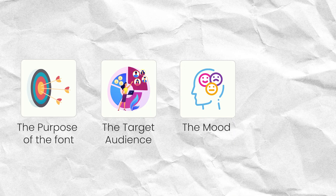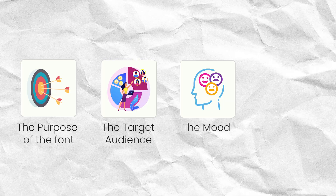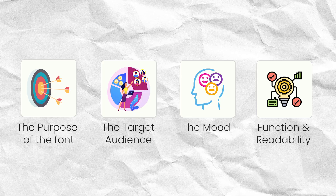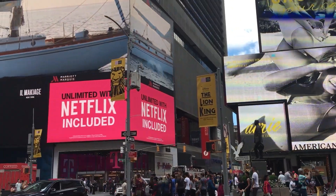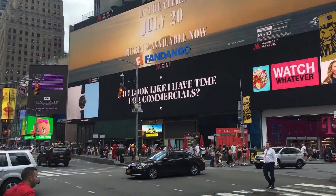The third thing to consider is the mood. Ask yourself what mood you want to convey and how you want viewers to feel after seeing your design — this alone should help you choose the perfect font. The fourth consideration is function and readability. Consider the intended use of the text: if it's a title or body text, that should guide your choice, because at the end of the day you want to make sure your text is legible.